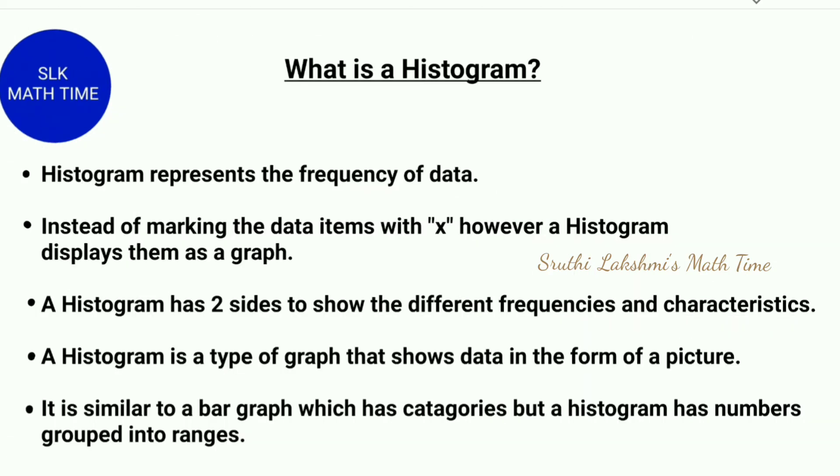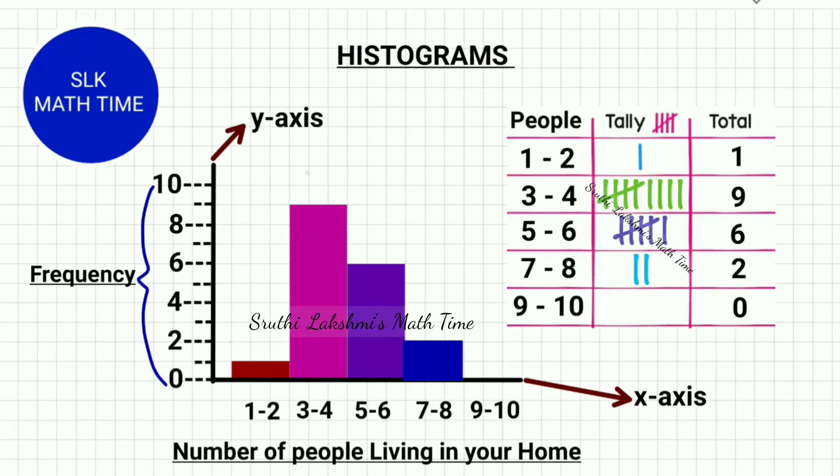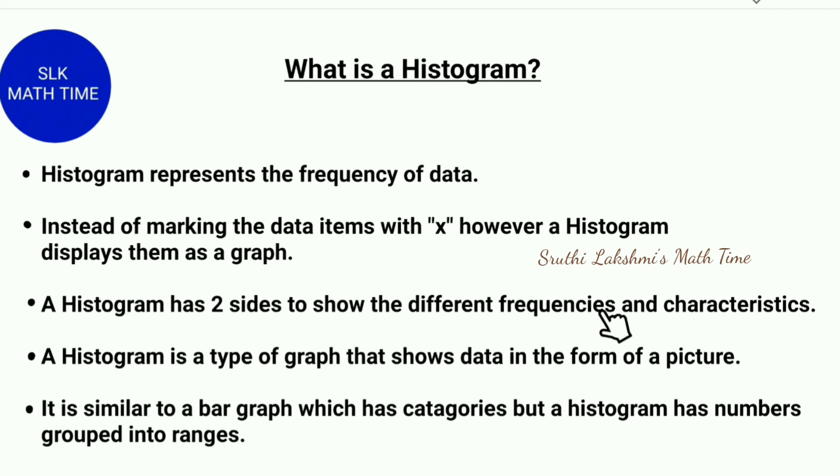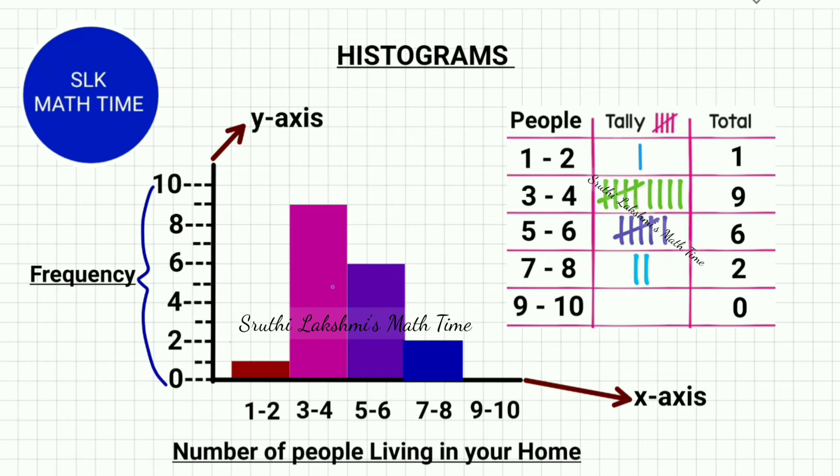Also, a histogram has two sides, which are the X-axis and Y-axis to show the different frequencies and characteristics. A histogram is a type of graph that shows data in the form of a picture. So here they mean by picture as the graphs.